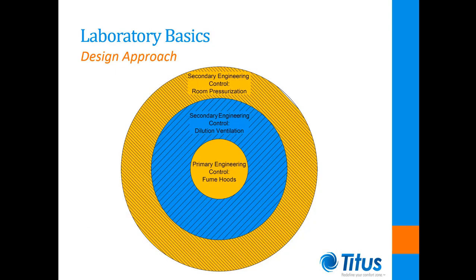In order to control contaminants, a similar setup to sterile compounding pharmacies and clean rooms is used with a primary and secondary engineering control system. Within lab spaces, this is achieved by utilizing fume hoods as a primary engineering control mechanism. These devices are engineered to capture and retain any chemical or biological contaminants as a result of the experimentation or testing being conducted. The entire room then becomes the secondary engineering control, where we are preventing any contaminants and/or odors from escaping the lab.